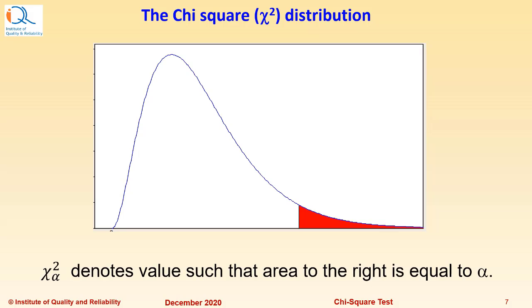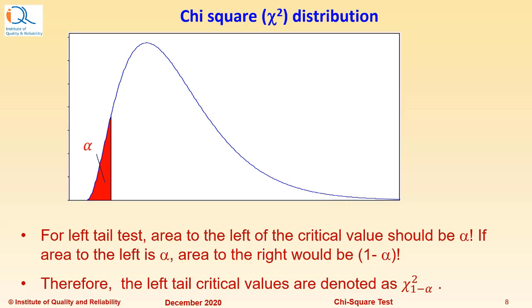As explained in our video on Chi-Square distribution, Chi-Square Alpha denotes value such that area to the right is equal to Alpha. For left tail test, area to the left of the critical value should be Alpha. If area to the left is Alpha, area to the right would be 1 minus Alpha. Therefore, the left tail critical values are denoted as χ²₁₋α.